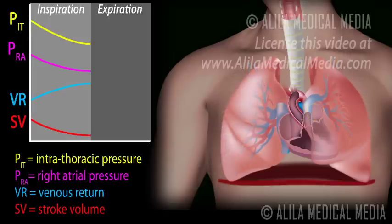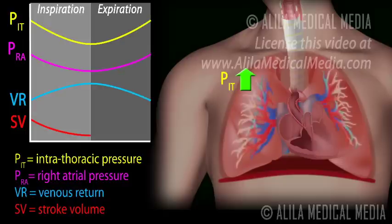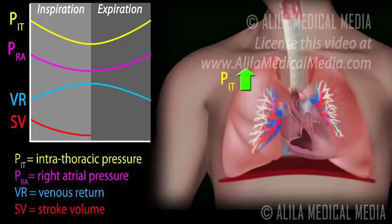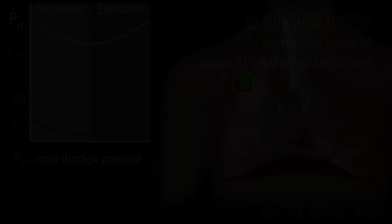During expiration, the diaphragm moves up. The pressure in the thoracic cavity reverses. Venous return decreases. Pulmonary blood vessels shrink, pumping more blood through the pulmonary veins into the left atrium. Stroke volume increases as a result.